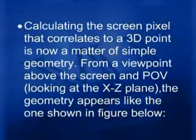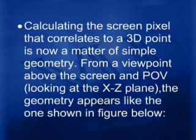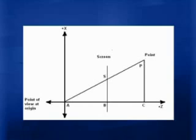Calculating the screen pixel that correlates to a 3D point is a matter of simple geometry. From a viewpoint above the screen looking at the x-z plane, the geometry appears as shown in this figure. We can see the screen and the point of view from a third standpoint, and we are looking at a picture showing a couple of triangles. If you look at them closely, you'll find them to be similar triangles.